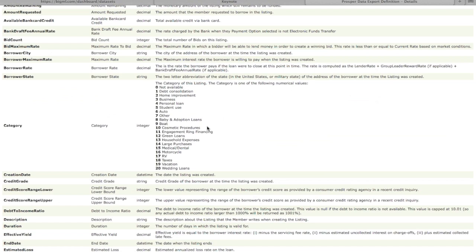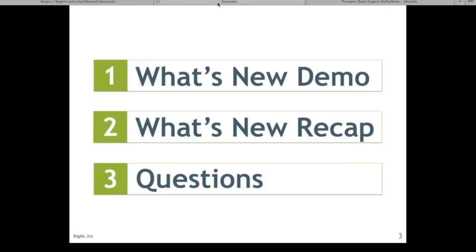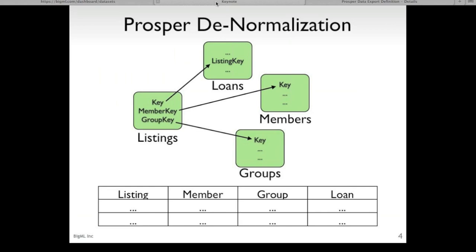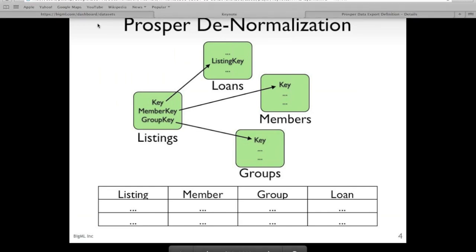A quick note about the data preparation in case anyone is interested in repeating this. I actually wrote a script which downloads the data from Prosper in a daily differential in XML, and accumulates those changes in a Mongo database. I then selected only listings created after January 1, 2012, and joined the member, group, and loan data for each listing using the keys in each collection, and built a denormalized CSV, which I've already uploaded to BigML. I've also already created the dataset, so we're going to go straight into the dataset now.